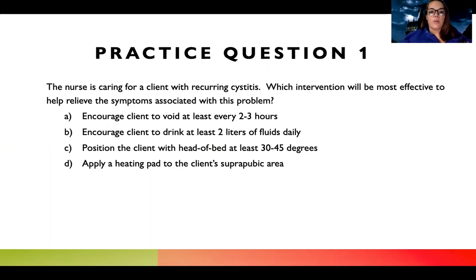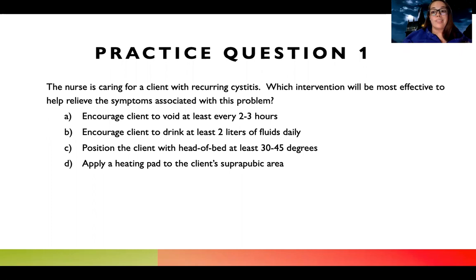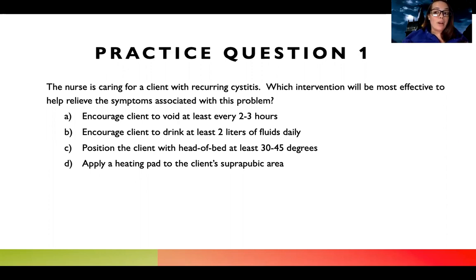What most students do is they read the question, read all the choices, and then start panicking. What I recommend doing is before you even get into the answer choices — especially because these are practice questions — practice reading questions and really understanding what they're asking you. Anytime you see a question that says 'most effective,' it means that all of the answer choices could be correct, but what's going to be most helpful?